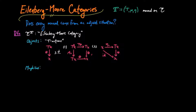The morphisms of the Eilenberg-Moore category are t-equivariant maps, meaning that if we have two t-actions theta and theta prime, then a t-equivariant map is a morphism f in the category e from x to x prime, such that this square commutes, meaning that we can take tf followed by theta prime, and that is equal to theta followed by f.